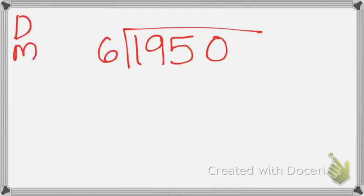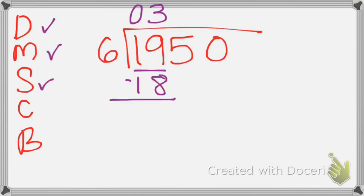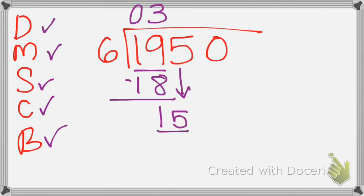My steps always apply, and I will continue to work step by step. Six goes into one zero times, so I look at the first two digits: six goes into nineteen three times. Six times three is eighteen. Now I subtract: nineteen minus eighteen gives me one. One is less than six, so I'm ready to bring down the next digit. Now I've gone through all my steps and I'm ready to start back over, this time looking at fifteen.